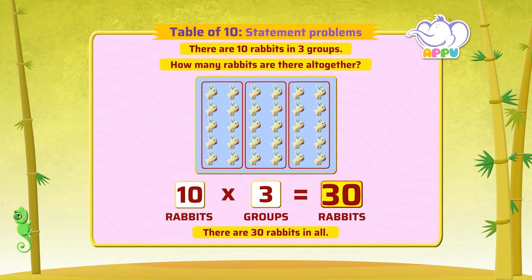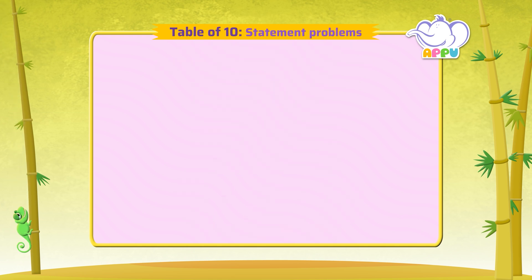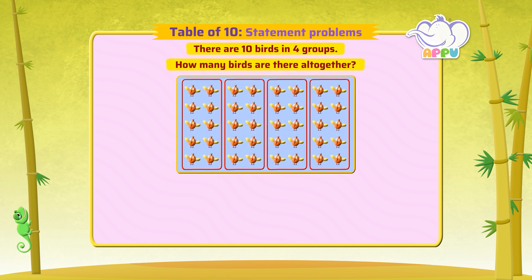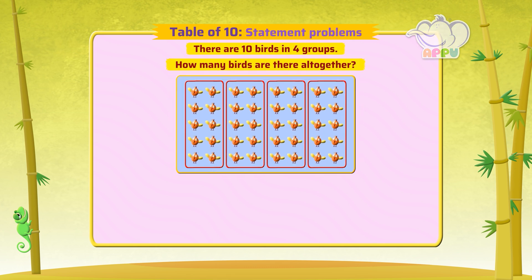That's incredible! There are ten birds in four groups. How many birds are there all together? To find the total number of birds, we multiply.